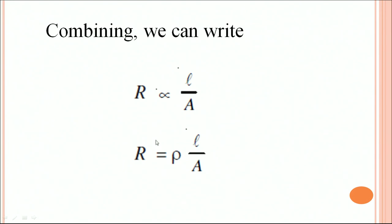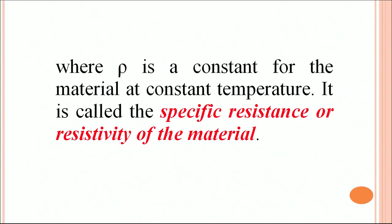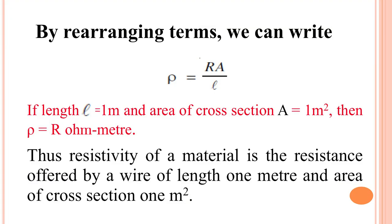We can write this in a better mathematical form as R = ρL/A. What is ρ (rho)? Rho is a constant for a given material at a constant temperature; it is called specific resistance or resistivity of the material. Rearranging, we get ρ = RA/L. This gives a formula for obtaining the specific resistance or resistivity of any material. If we put L = 1 metre and A = 1 metre squared in SI units, then ρ equals R. So resistivity of a material is the resistance offered by a wire of that material of length 1 metre and area of cross section 1 metre squared.